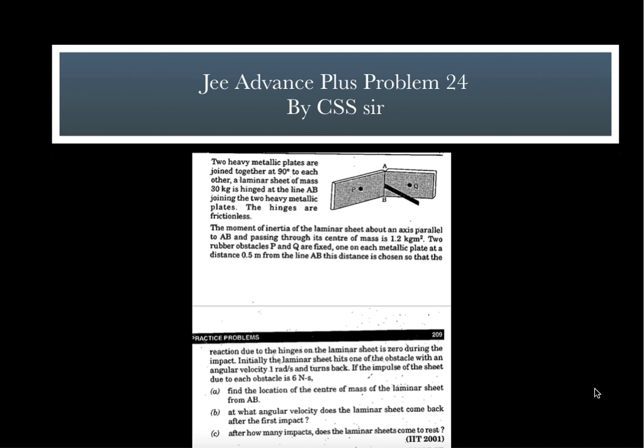The first problem is from JEE Advanced 2001 and this is a very cool problem. As you can see, there are two walls and P and Q are two elastic rubbers. This is a heavy metallic plate. Both the walls are at 90 degree angle and this heavy metallic plate is having some initial angular speed omega. So it collides with Q, then it collides with P, collides with Q, P and it keeps on colliding P and Q. You are supposed to answer some questions. First, find the location of center of mass of the laminar sheet from AB. From that information, you have to find out the location of center of mass.